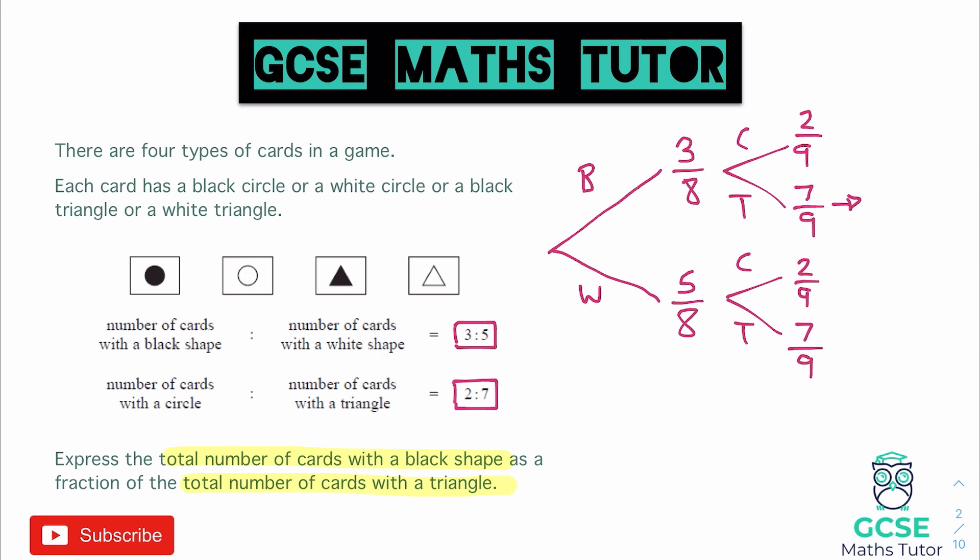which is 21. So we'd have 21 on the top, and on the bottom, we'd have eight times nine, which is 72.